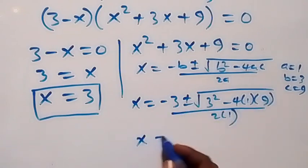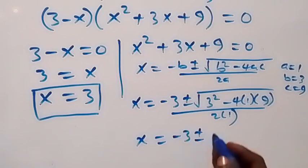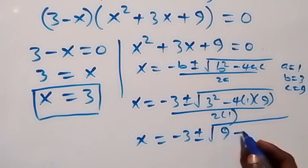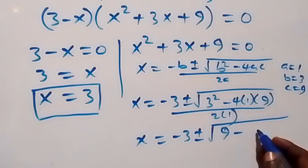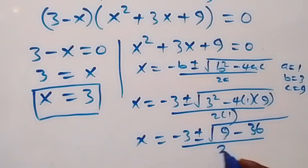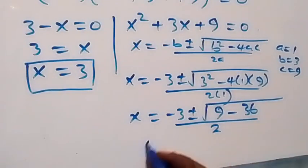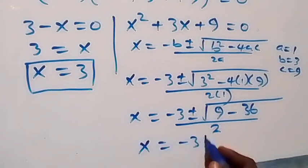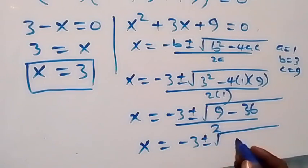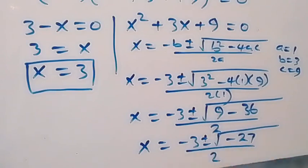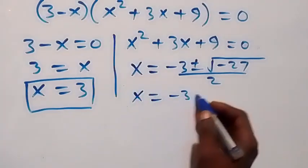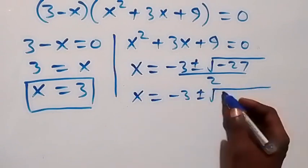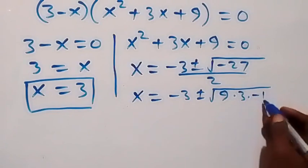And this becomes x equals minus 3 plus or minus square root of 3 squared — here we have 9 — then minus 4 times 9, here we have 36, over 2. Then this gives us x equals minus 3 plus or minus square root of 9 minus 36. Here that is minus 27, then over 2. Then we separate this as x equals minus 3 plus or minus square root of 9 times 3 times minus 1, over 2.